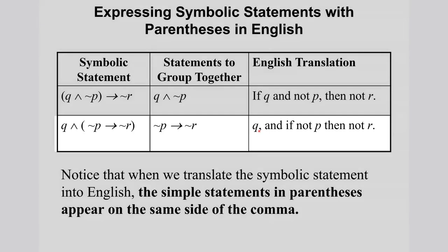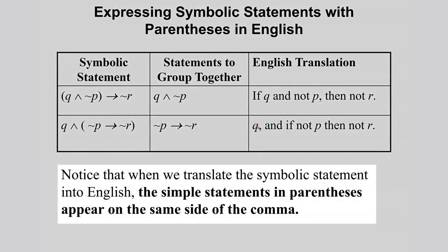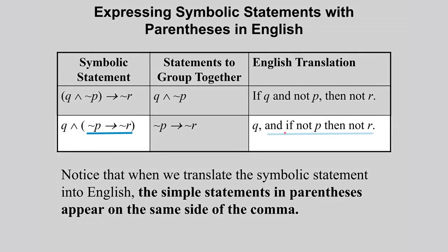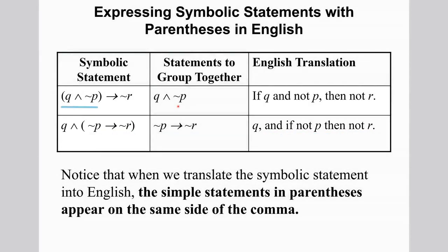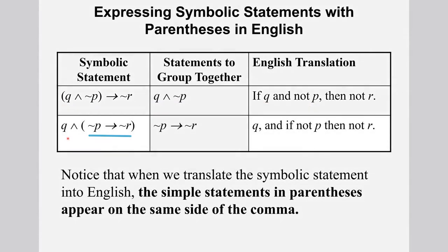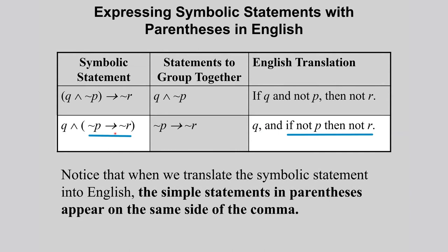One thing you should notice is the comma. When we translate a symbolic statement into English, the simple statements in the parentheses appear on the same side of the comma. For instance, if something is grouped together, they all appear on that side of the comma. A parenthesis is signaled by placing a comma. So you say 'if Q and not P, then not R,' and 'Q, and if not P then not R.' The comma separates the two groups.